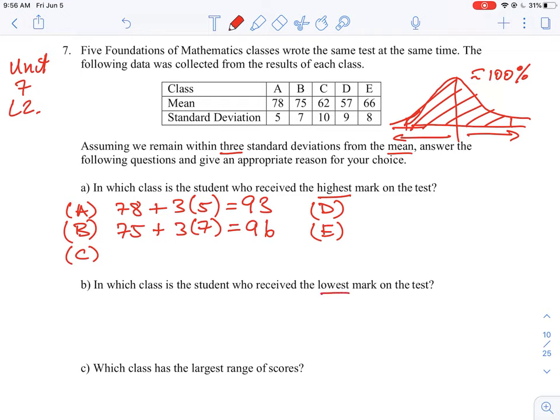And then the lowest mark is just the opposite, and so instead of adding we're going to subtract. So you're going to subtract three times 5 for the first one and that gives us 63. That means essentially nobody, virtually 100% of all the people in this class got 63 or better. That is going to be the lowest possible mark.